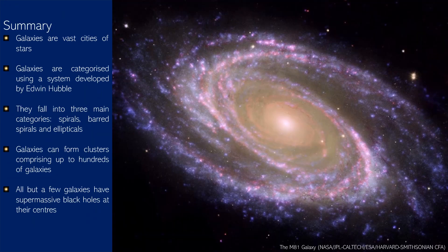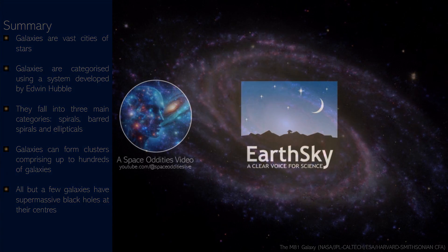We hope you have enjoyed this introduction to galaxies. To summarise: galaxies are vast cities of stars, categorised using a system developed by Edwin Hubble. They fall into three main categories — spirals, barred spirals, and ellipticals. Galaxies can form clusters comprising up to hundreds of galaxies, and all but a few galaxies have supermassive black holes at their centres. Don't forget to check out our other Astronomy Basics videos on the Space Oddities YouTube channel. Until next time, goodbye.